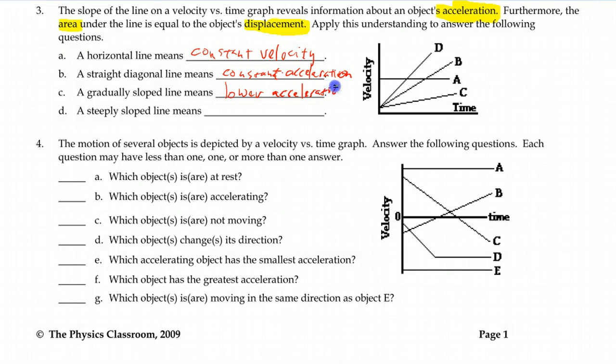If the line is more gradually sloped, then that means you have a slower, a lower acceleration value. You don't want to equate slower and acceleration. It just means a lower value, less change than you would have with the steeply sloped line.